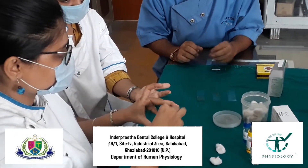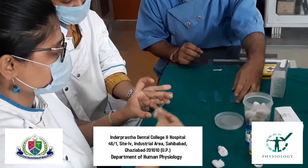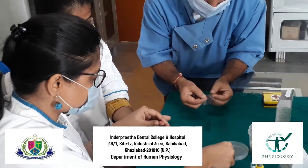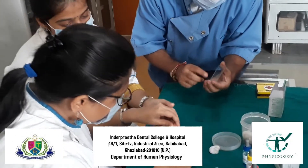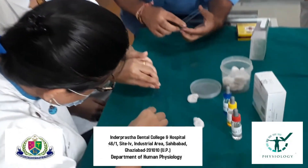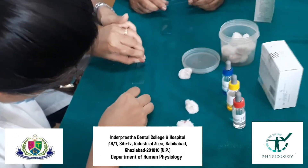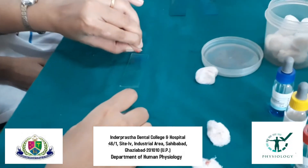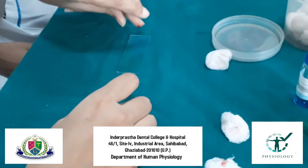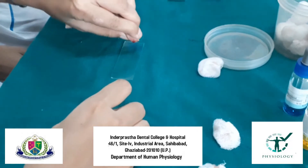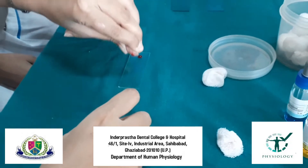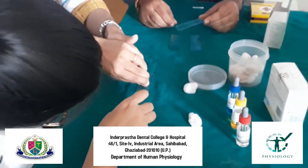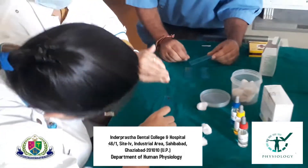We shall also sterilize the glass slides in order to avoid any sort of contamination. After that, we will add two drops of blood on the first glass slide on both sides of the glass slide.